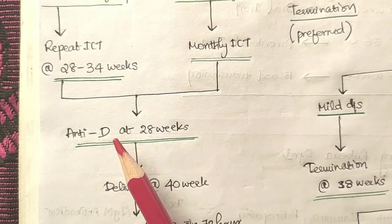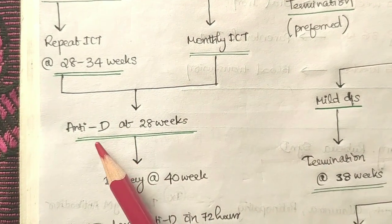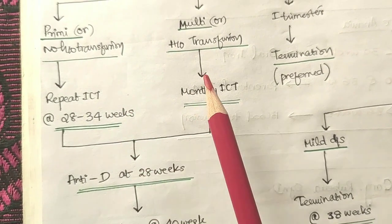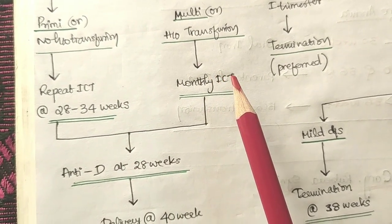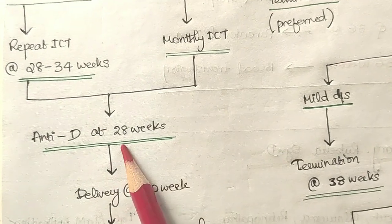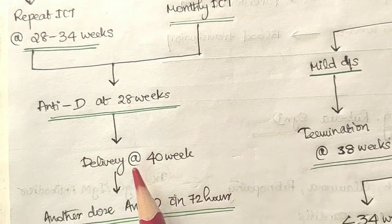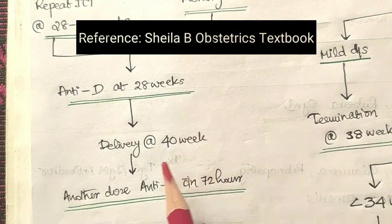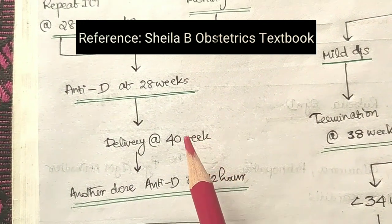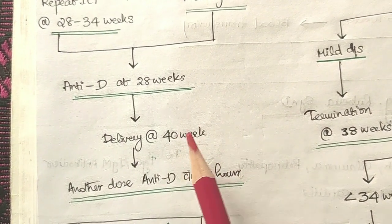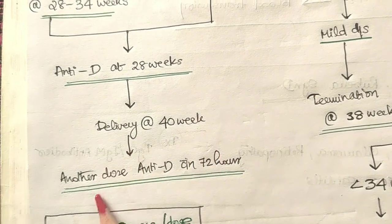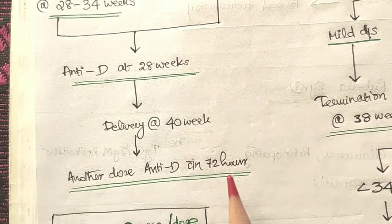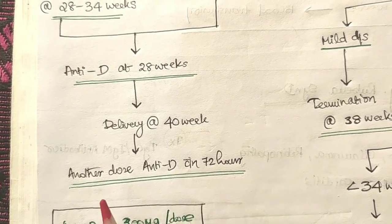Regardless of whether the mother is primigravida or multigravida with a history of transfusion, we administer an anti-D immunization dose at 28 weeks. Delivery is planned at 40 weeks, though it can be done earlier depending on clinical indications.